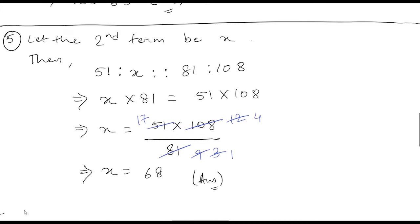Now let us move to question number five. In a proportion, the first, third, and fourth terms are 51, 81, and 108 respectively. Find the second term. So we don't know the second term and we are going to assume the second term to be X. Let the second term be X.